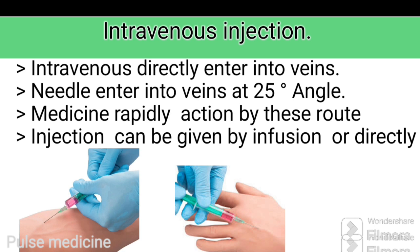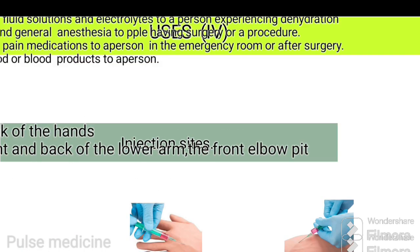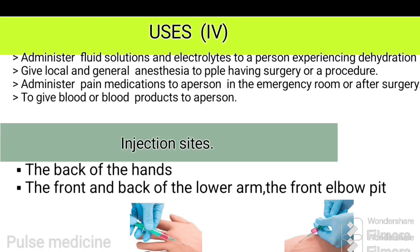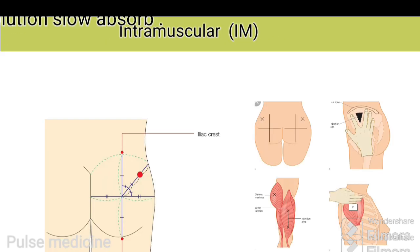Intravenous injection can be given by infusion or directly. Uses are: to administer fluid solution and electrolytes to a person experiencing dehydration, give local and general anesthesia to people having surgery, administer pain medication to a person in the emergency room, and to give blood or blood products into a person. Injection sites are the back of the hands and the front and back of the lower arm.